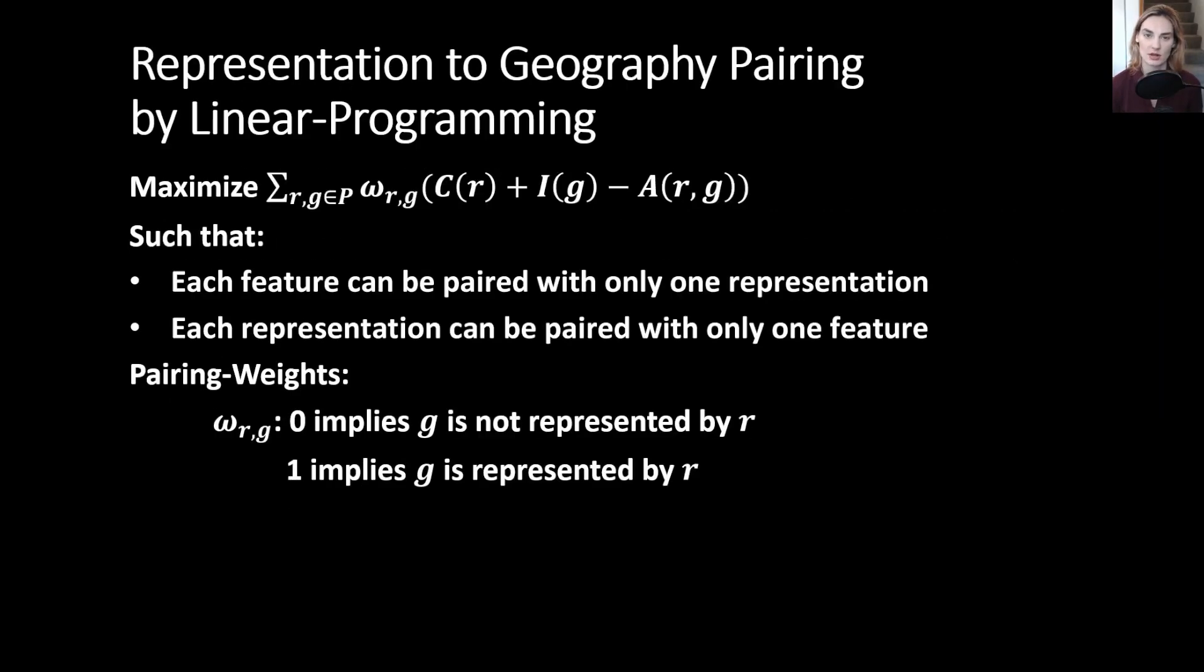In the first stage, we use linear programming to pair different representations to different geographic features. For each pair of a representation R and a geographic feature G, we have a weight omega R,G, where a zero weight implies that we are not going to pair the two, and one implies that we are going to pair the two.